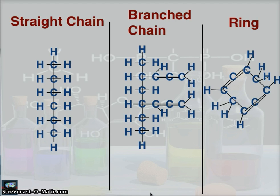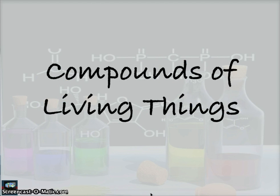There are three carbon backbones: straight chain, branched chain, and ring. This shows the different types of backbones — straight, branched, and ring. Let's look now at compounds of living things.